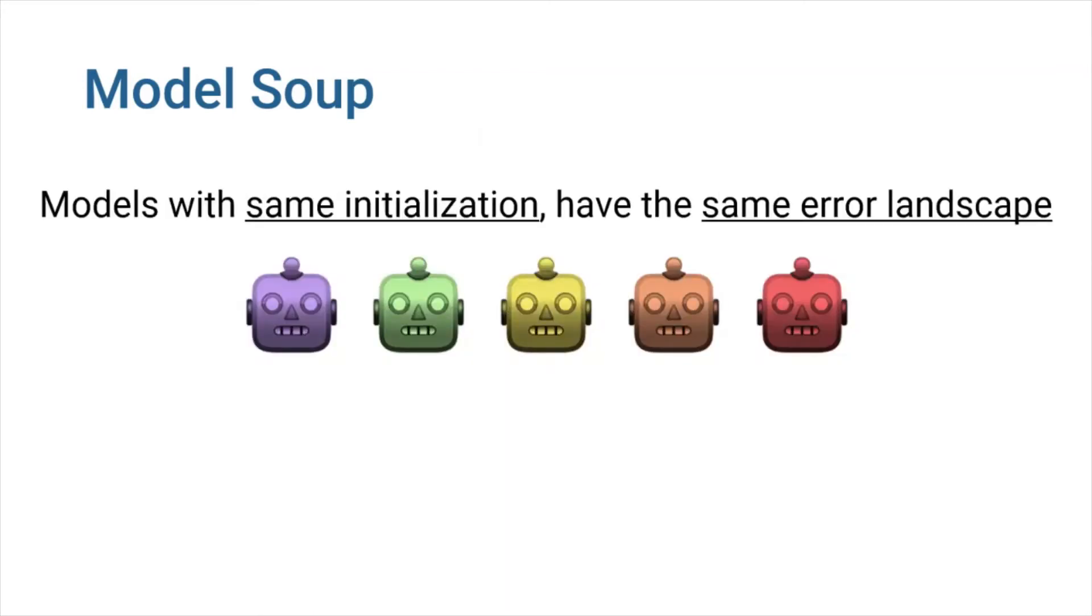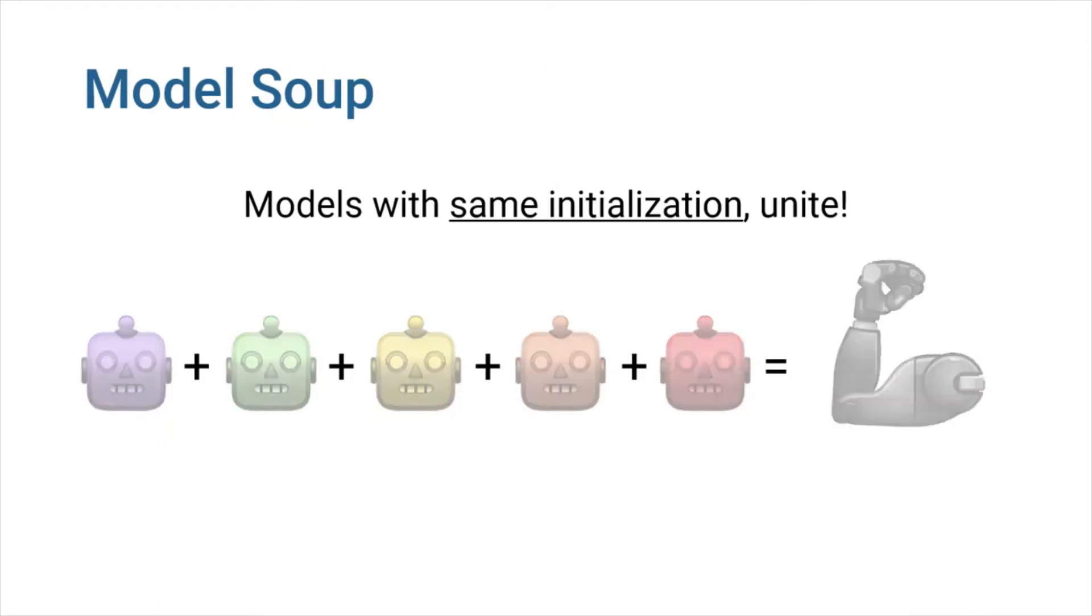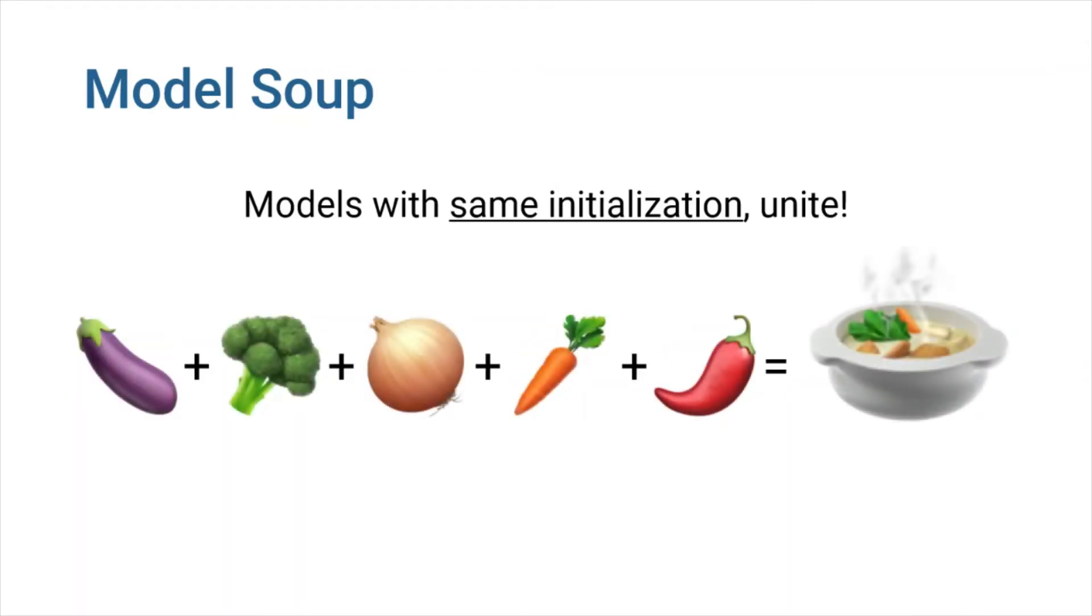Because models that have been tuned independently from the same initialization have the same error landscape, averaging their weights can help them perform better. As long as your models have the same initial state, they could be combined as ingredients of a model soup.